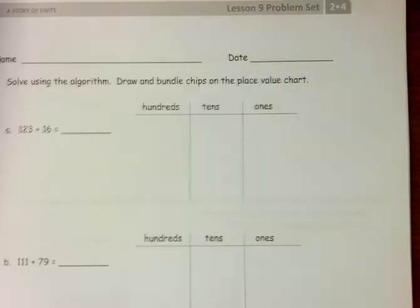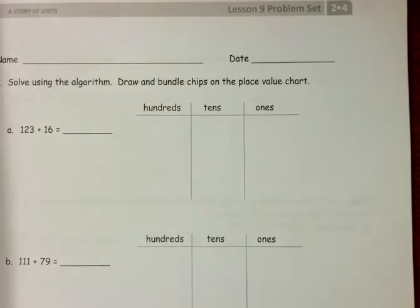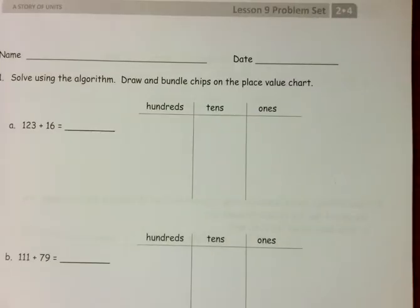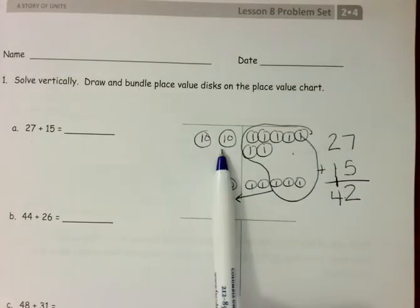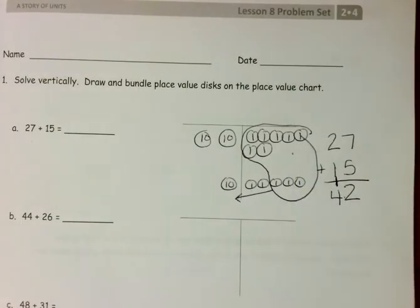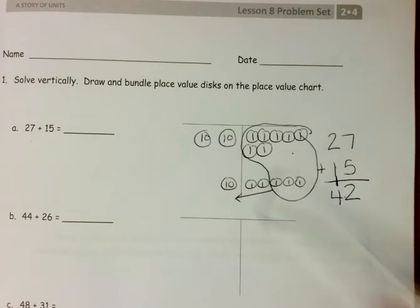Lesson nine is similar work, but we're going to start doing what's called chips. With our place value disks, we're actually writing in our 10s and our ones. It takes a little bit longer, but it helps students to concretely or more pictorially see what's happening.